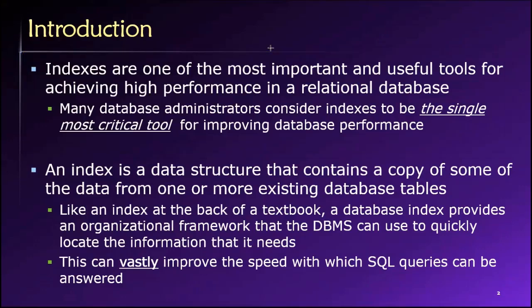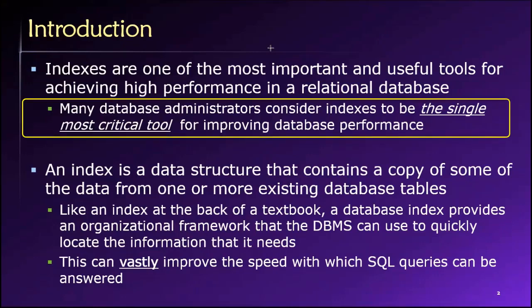We saw during topic number five that one of the ways we can improve query performance is through denormalization. And that is absolutely true — it can yield some marked improvements in performance by doing things like avoiding joins and pre-computing values so they don't need to be computed at runtime. But the single most powerful tool for achieving good query performance in a database environment is indexes.